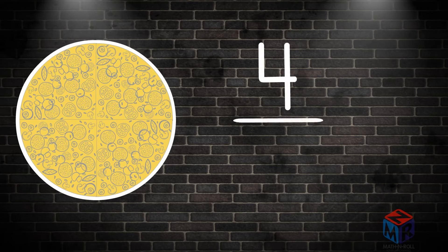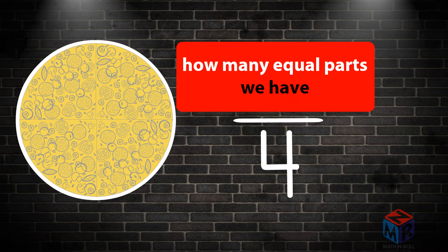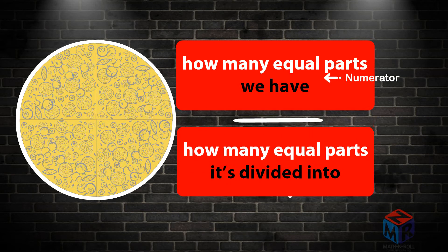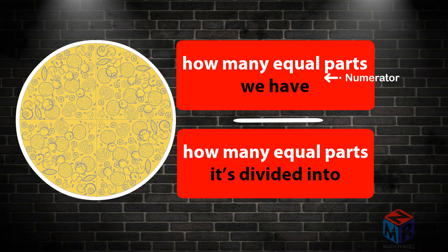you need two numbers: one number on top, one number on the bottom, and a line between them. The number on top tells us how many equal parts we have — it's the numerator. The number on the bottom tells us how many equal parts it's divided into — it's the denominator.